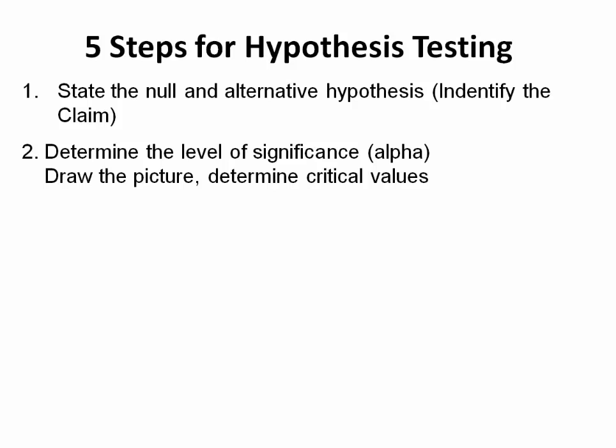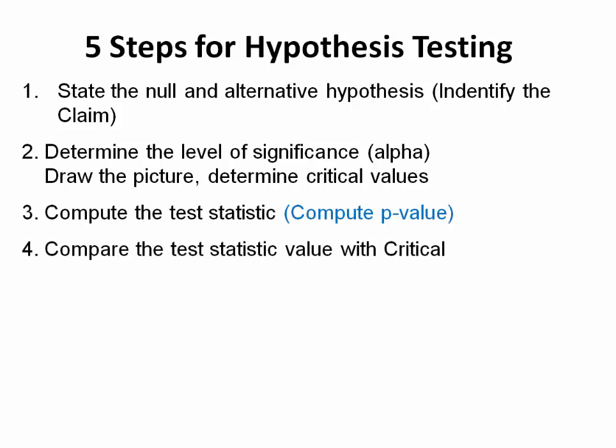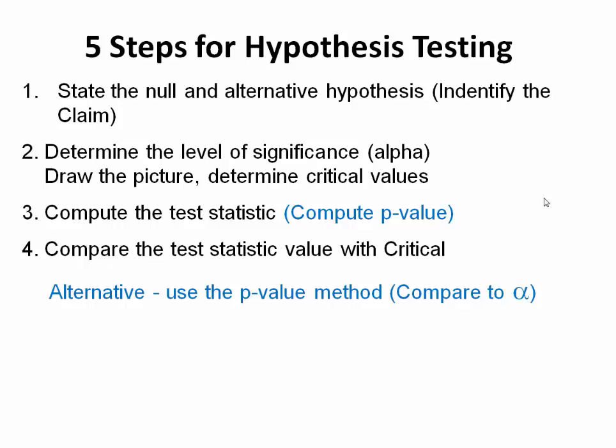In step two, we will draw the picture and determine the critical values. In step three, we will compute the test statistics and the p-value. In step four, we will compare the test statistics with the critical value, and we will also show you how to use the p-value method, where we take the p-value and compare it to alpha.